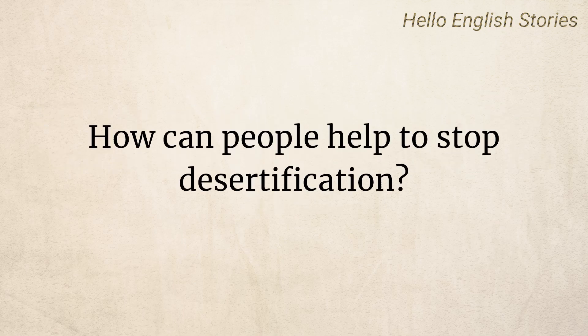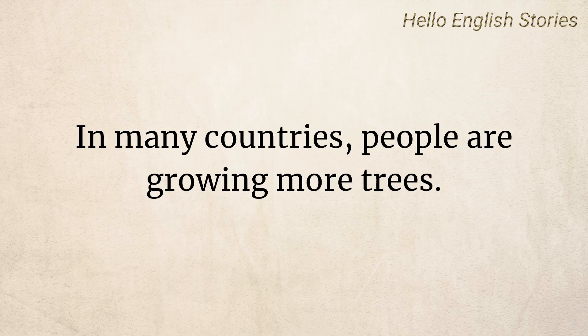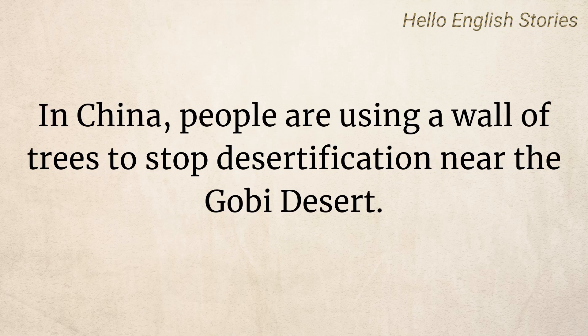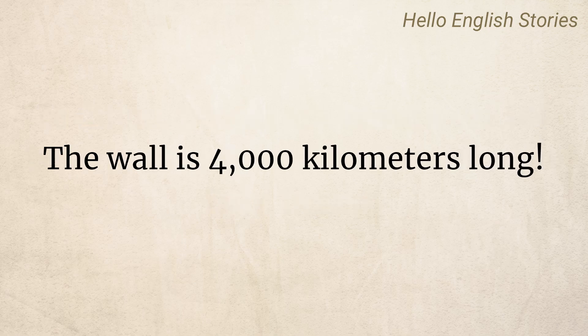How can people help to stop desertification? In many countries, people are growing more trees. Trees stop the soil blowing away. In China, people are using a wall of trees to stop desertification near the Gobi Desert. The wall is 4,000 kilometers long.